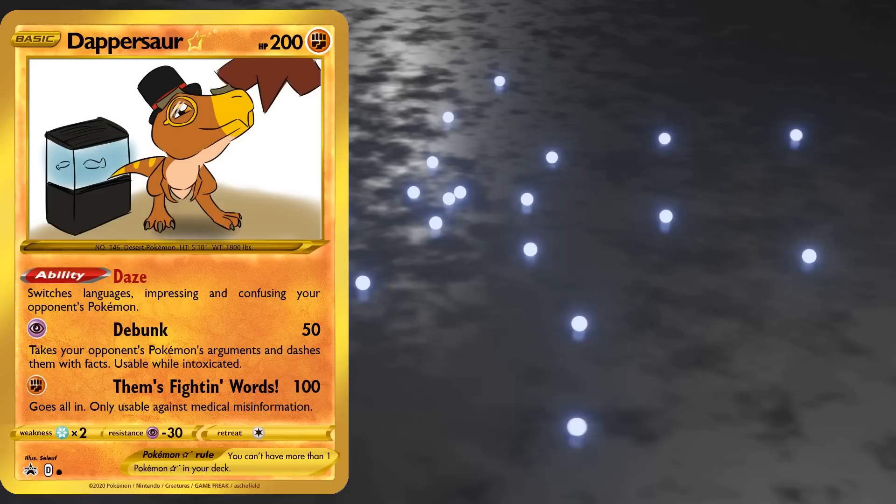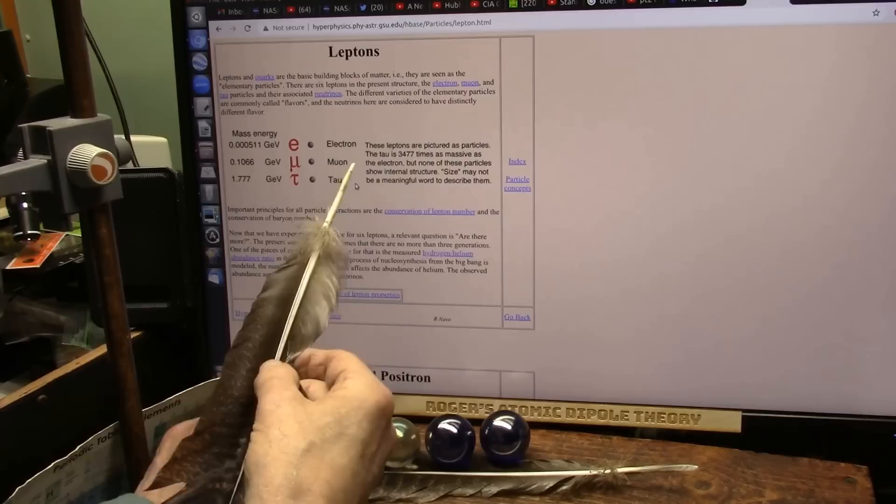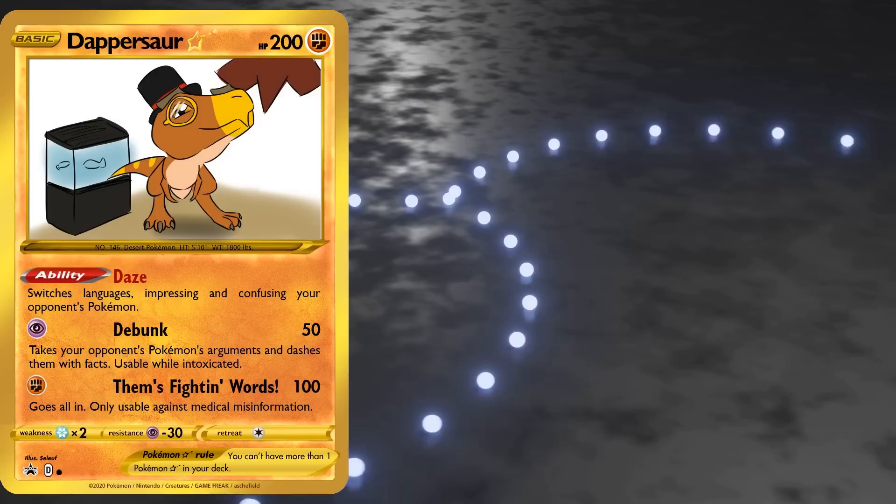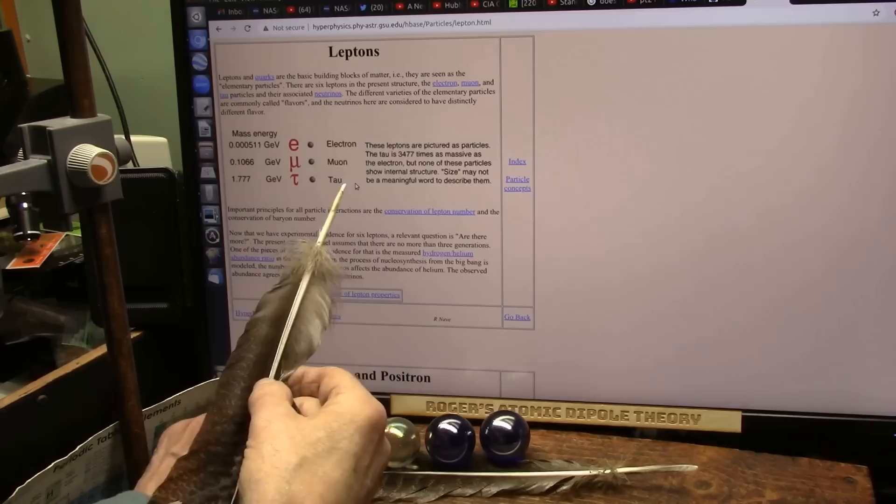Anyone else think that maybe electrons don't have infinite charge and mass or is it just me? But when you have a tau and it's very heavy, which it would have to be if it's made of electrons and electrons now suddenly have infinite mass.